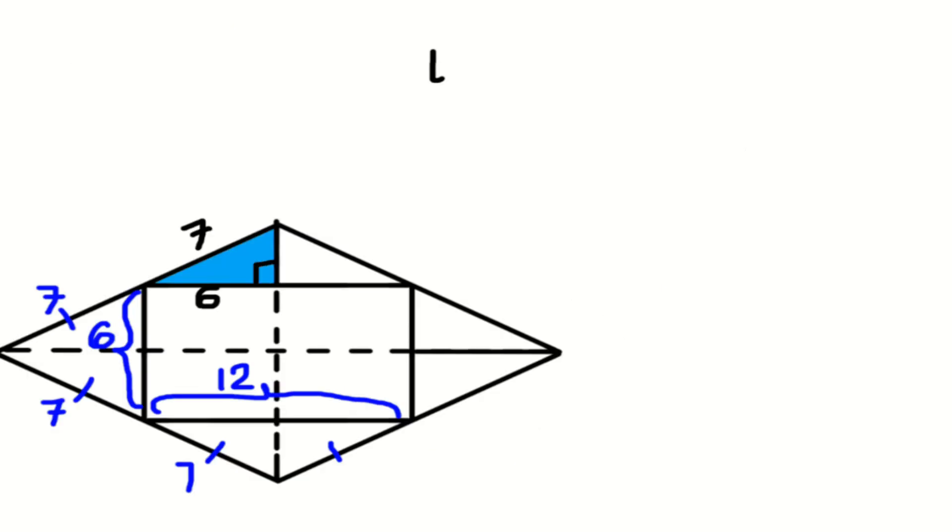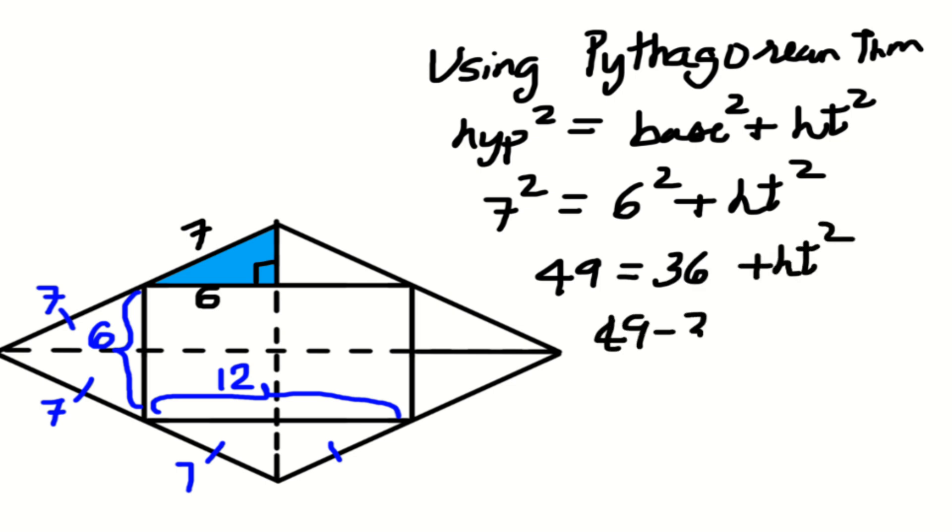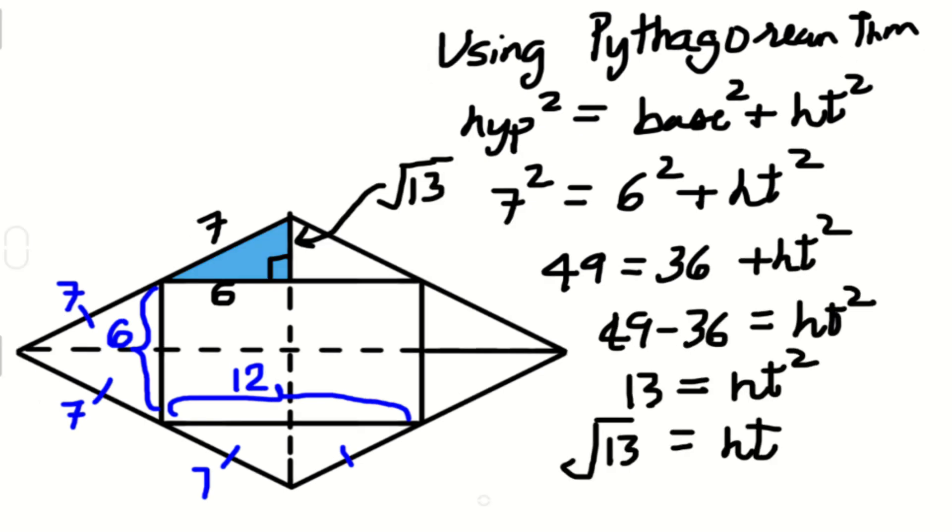While you're at it, let's do the same for the other triangle. It's always a good idea to solve the problem in multiple ways, so that you know your answer is correct. In this triangle, the base is half of 12, which is 6, and the hypotenuse is 7. Again, using the Pythagorean theorem, you can get the root of 13.